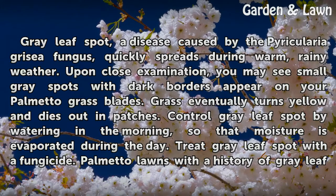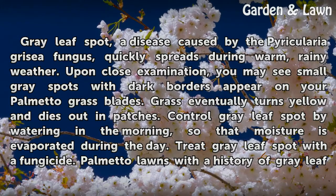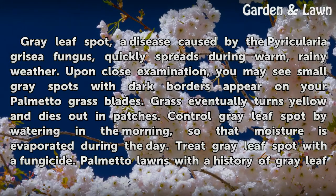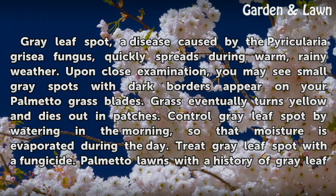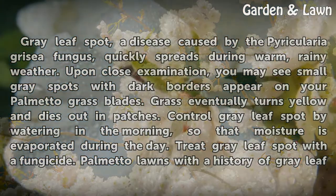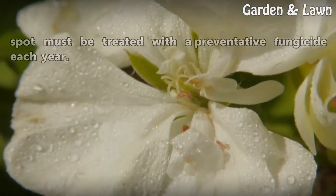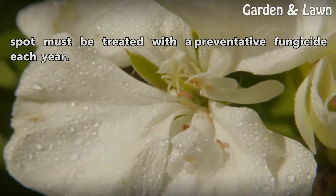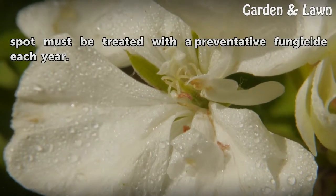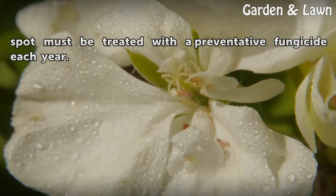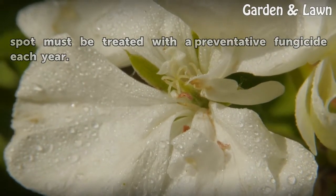Control gray leaf spot by watering in the morning, so that moisture is evaporated during the day. Treat gray leaf spot with a fungicide. Palmetto lawns with a history of gray leaf spot must be treated with a preventative fungicide each year.